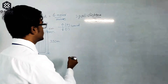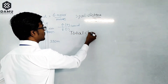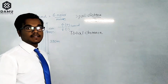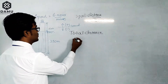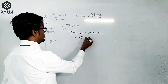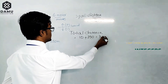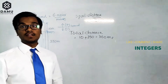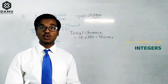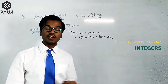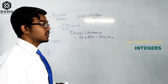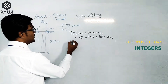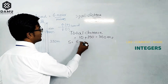The total distance equals 10 plus 350 meters, which is 360 meters. The minus sign is only used to indicate direction — below the ground level — not as a negative value for distance. So the total distance to be covered is 360 meters.